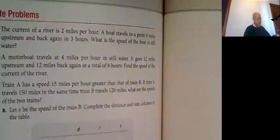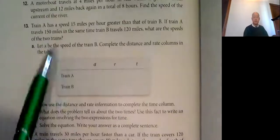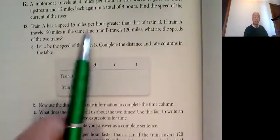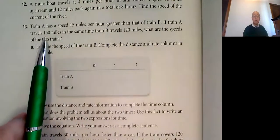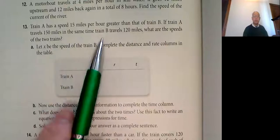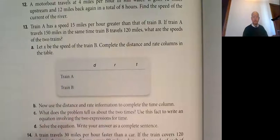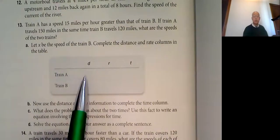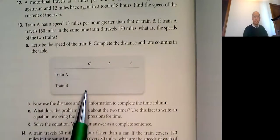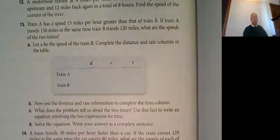Problem number 13, similar theme. Train A has a speed of 15 miles per hour greater than that of train B. Train A travels 150 miles at the same time that train B travels 120 miles. So those are distances. So we already know train A, 150 goes here, and 120 goes here for train B. What are the speeds of the two trains?